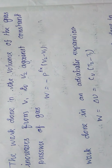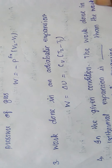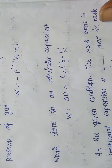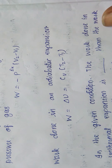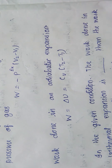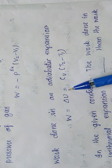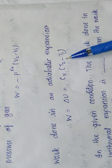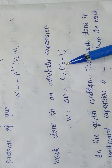The third question: the work done in an adiabatic expansion. We can also expect questions based on this concept. In adiabatic expansion, W = ΔU = Cv × (T2 - T1), because this is an expansion and the temperature increases from T1 to T2.